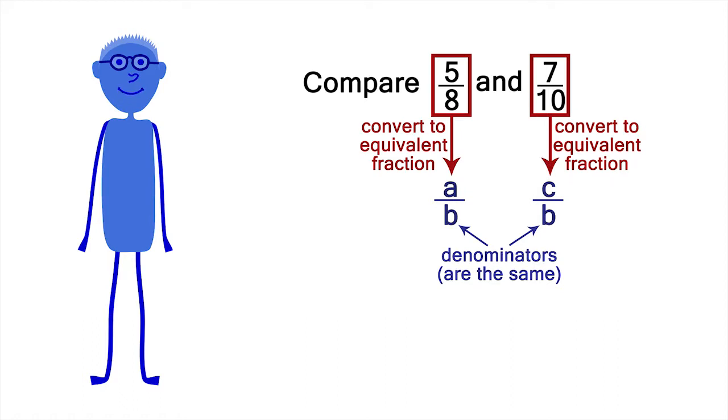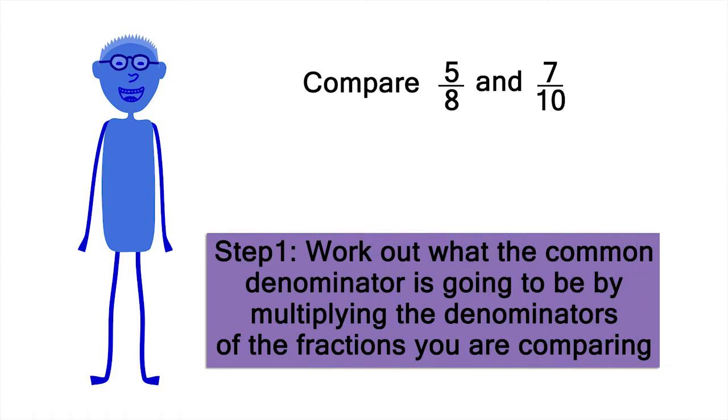This can be done by converting each fraction to an equivalent fraction, each of which has a common denominator. I'll show you one way to do this. First I'll work out what the common denominator is going to be by multiplying the denominators of the fractions we're comparing.